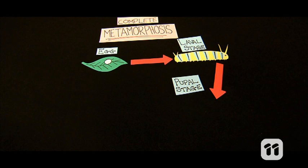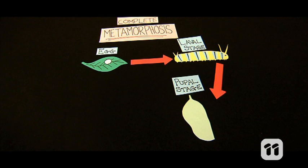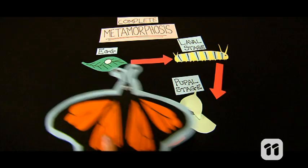The next stage, the pupal stage, happens when the caterpillar forms a cocoon. Inside the cocoon, the caterpillar turns to a liquid and then its cells rearrange to form a butterfly. When the butterfly is fully formed, it emerges from the cocoon.